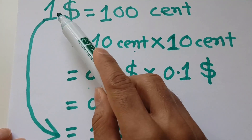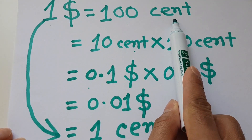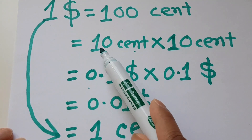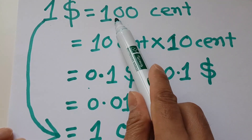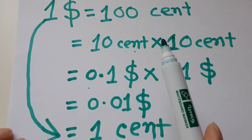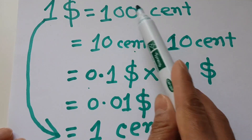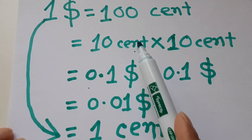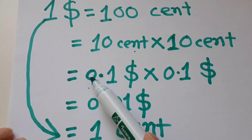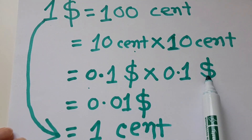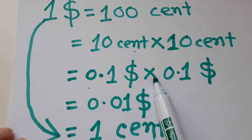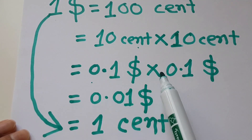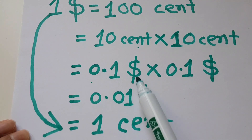Let me repeat from the beginning. One dollar equals one hundred cents — there are no tricks. I can expand one hundred cents into ten cents times ten cents. Even a grade 3 or grade 4 student knows ten times ten equals one hundred. I can then convert the units: ten cents is equivalent to zero point one dollar, and this other ten cents is also equivalent to zero point one dollar.